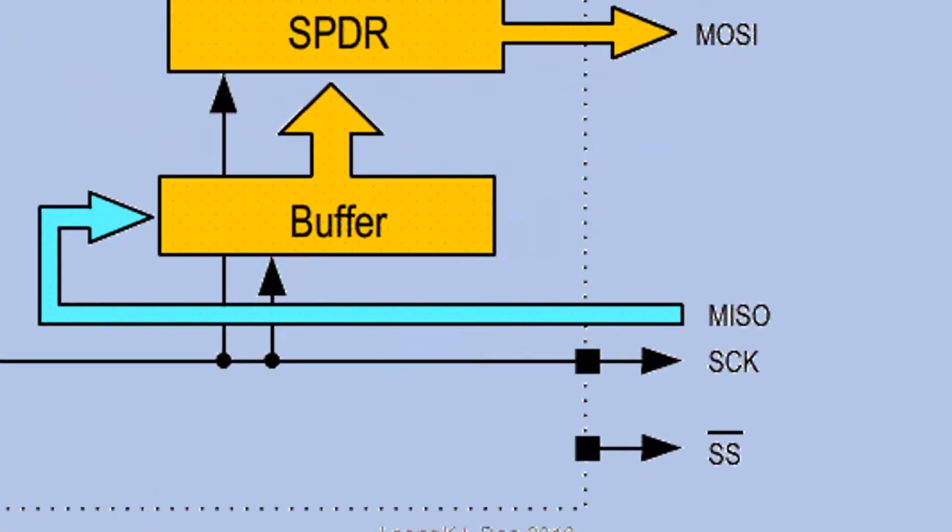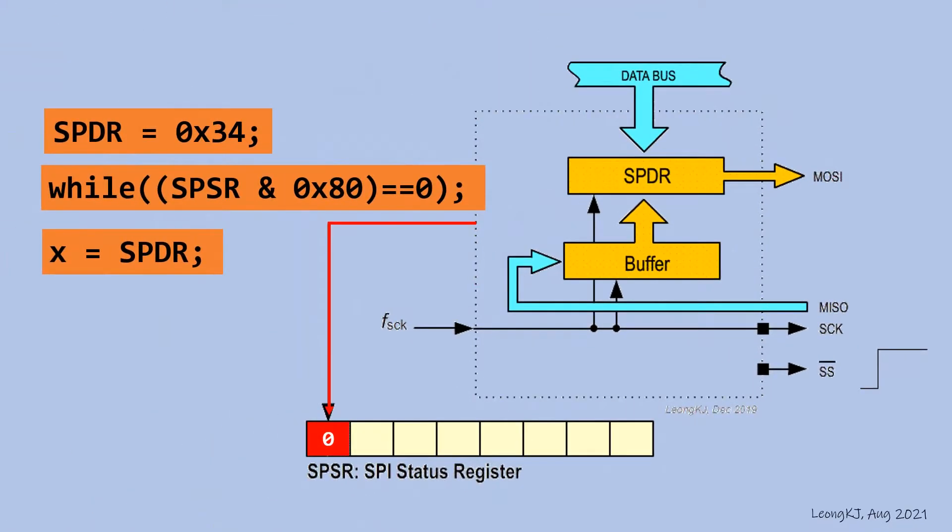Microcontroller deselects the slave by pulling the slave select signal to high. This is the instruction to pull PB2 to high.